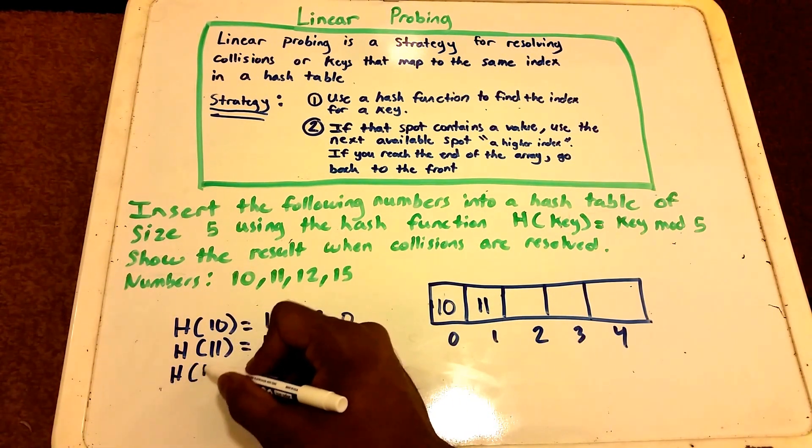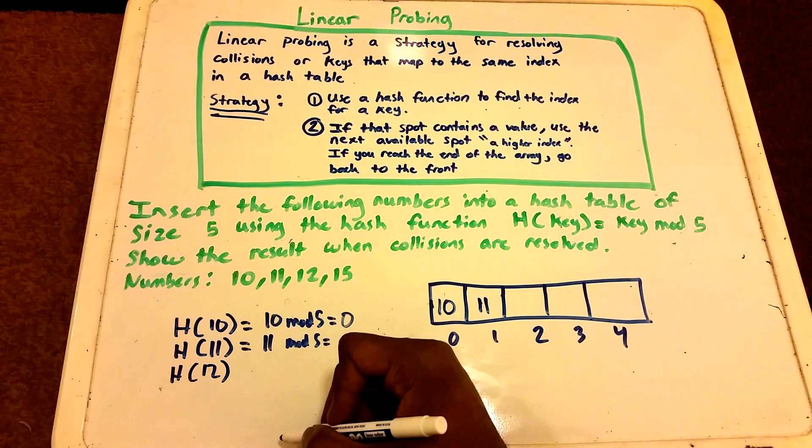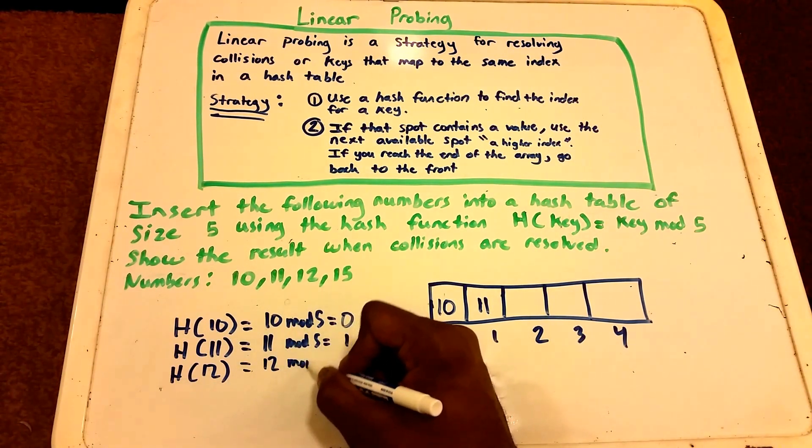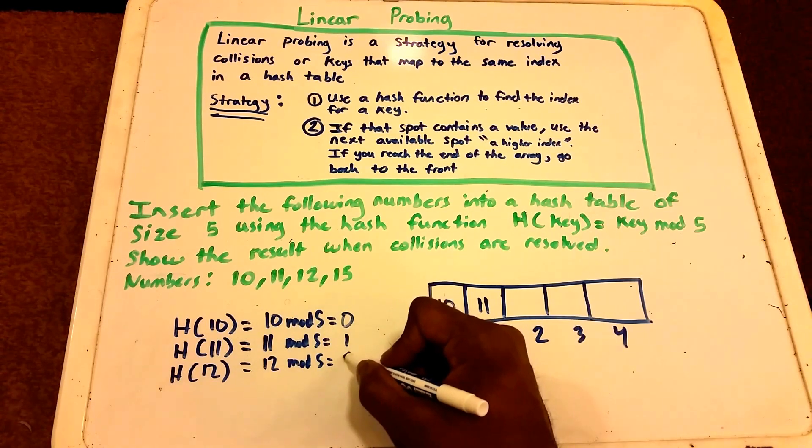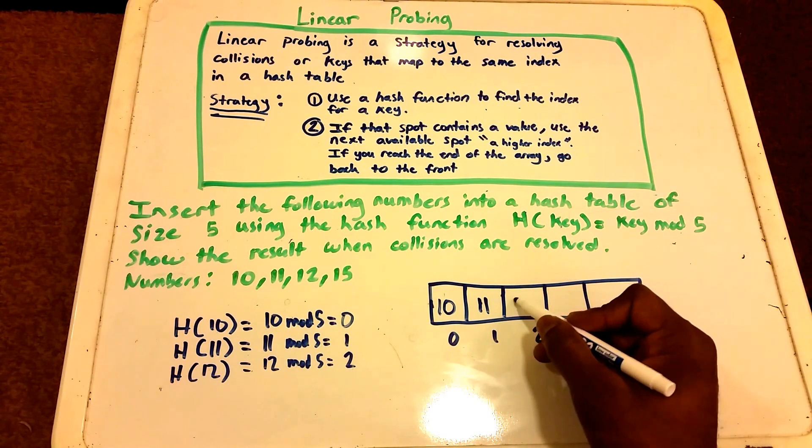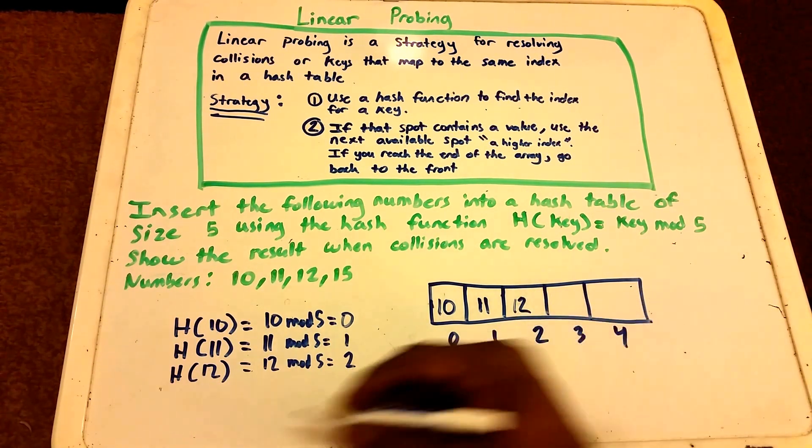Next up we input our key which is 12. This gives us 12 mod 5 which equals 2, and so in index 2 we put the value 12.